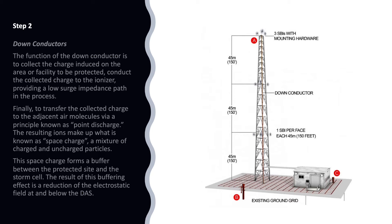The resulting ions make up what is known as space charge — a mixture of charged and uncharged particles. This space charge forms a buffer between the protected site and the storm cell, resulting in a reduction of the electrostatic field at and below the DAS.